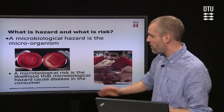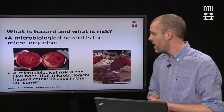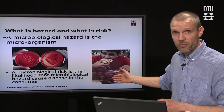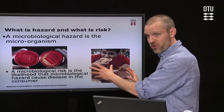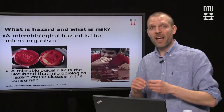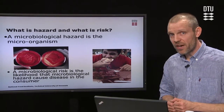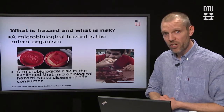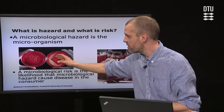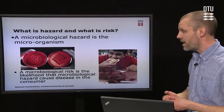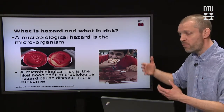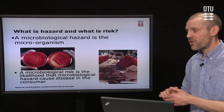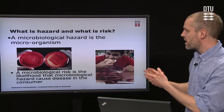Here we have two pictures — one with Salmonella on petri dishes, and one of a person eating sausages, where we assume there is Salmonella in the sausages. In both pictures, the hazard is present. However, the risk is very different. With the Salmonella in the petri dish, there is very low likelihood that the person holding the dish would develop foodborne salmonellosis. Whereas the person eating contaminated sausages is exposed to the hazard and has a likelihood of developing salmonellosis. So the hazards are the same in the two pictures, whereas the risk is very different.